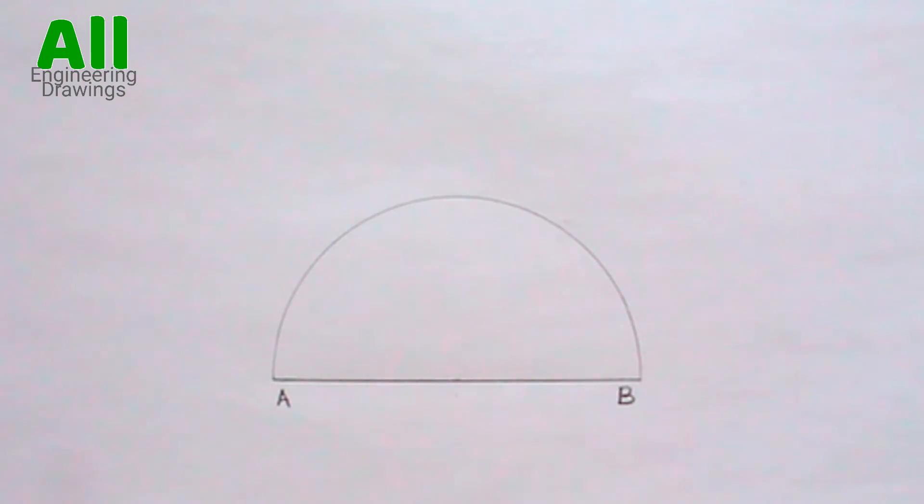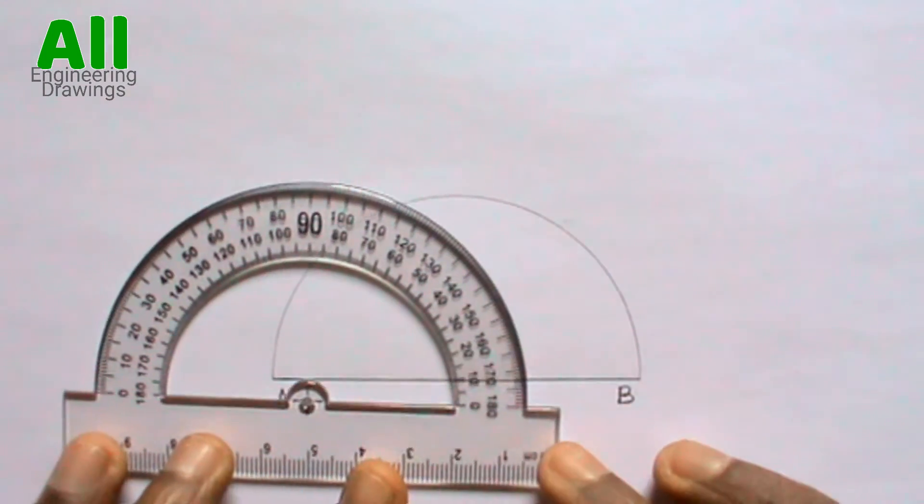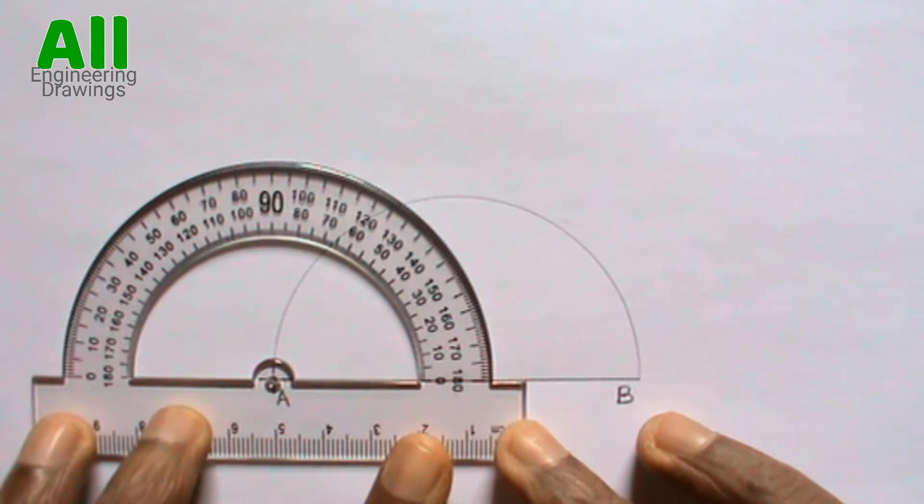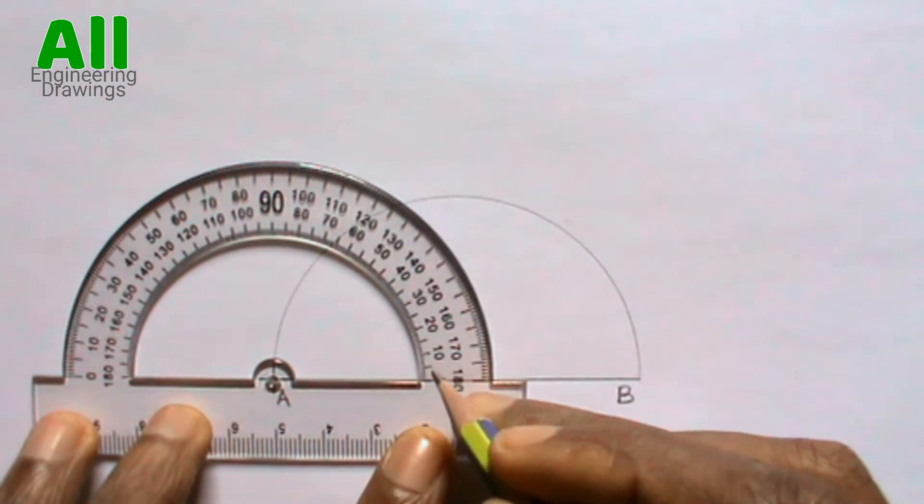Now it is time to draw the given angle. You can do so using your protractor. Just place your protractor at one end of the line. I am placing my protractor on point A. Then you can now mark the given angle.